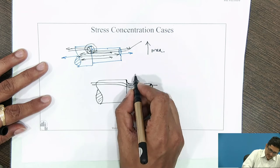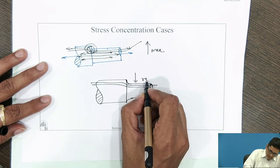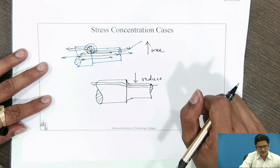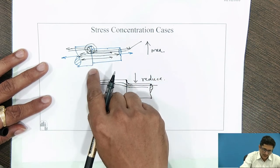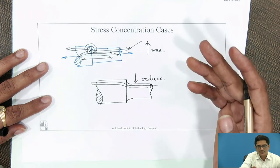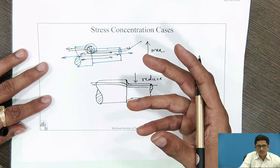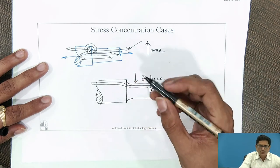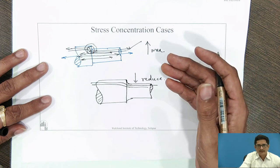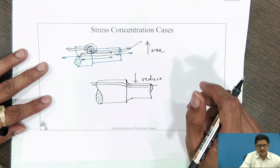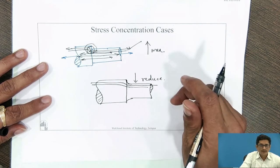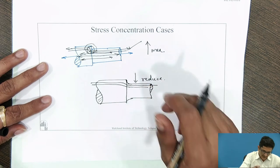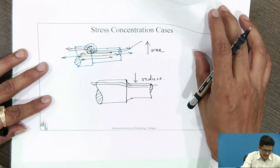The reason is, if I need a discontinuity, this discontinuity is essential because I need to put a bearing over here. I need to mount maybe a gear, maybe a pulley. Then I need to change the shape. I need to have these geometric irregularities as a functional requirement. I cannot eliminate it, but reduction is possible.